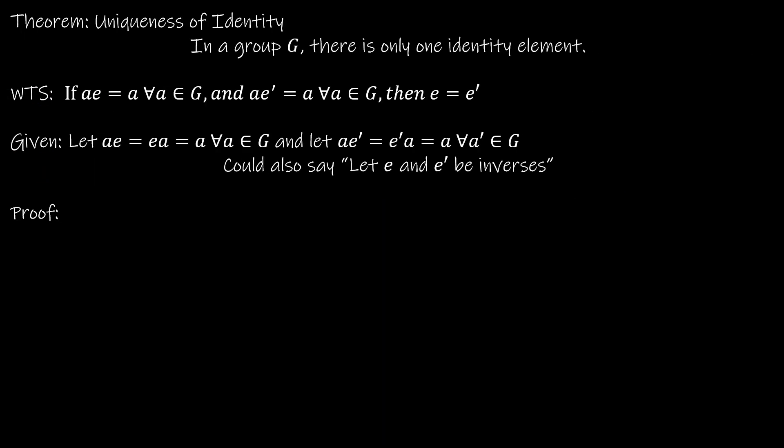The next property is the uniqueness of identity. The uniqueness of identity says essentially that there's only one identity element in a group. Before we get started on this proof, I want to point out that uniqueness proofs often assume two of something and then set out to prove that those two things must be the same. That's exactly what we're going to do here — I'm going to assume that there are two identities and then prove those identities are the same element.